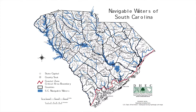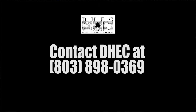Be sure to check if the section of stream you need to cross is considered a state navigable water. In South Carolina, bridge construction across navigable waterways is under the jurisdiction of the South Carolina Department of Health and Environmental Control. Anyone planning to construct a bridge across a navigable waterway must contact DHEC for permit application forms and technical design information.